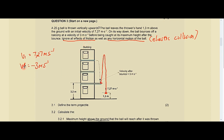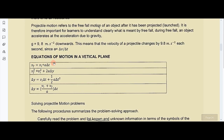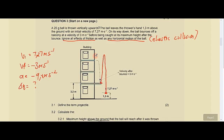We have vi, vf, and acceleration is still negative 9.8 meters per second squared. Note: whatever sign convention you chose in the first question must be used throughout. If upward is positive, acceleration is negative 9.8 m/s² for every sub-question. We are looking for delta t, so the ideal formula is equation one: vf = vi + a·Δt.